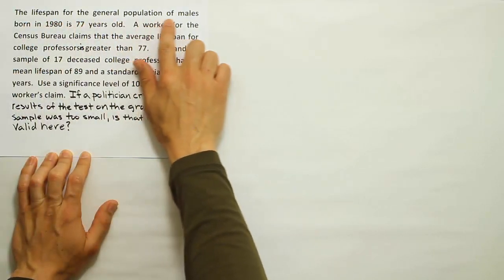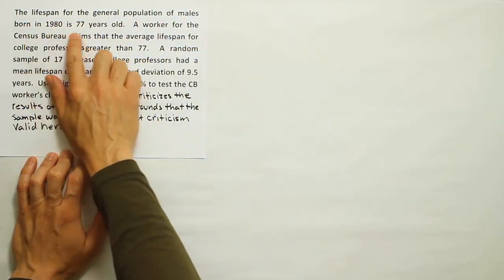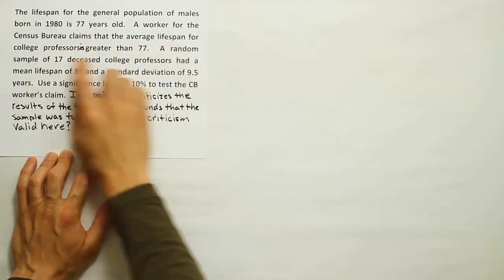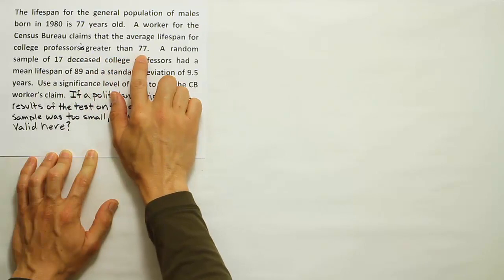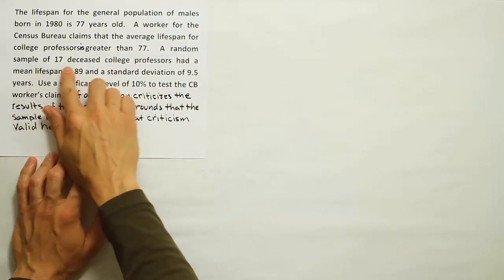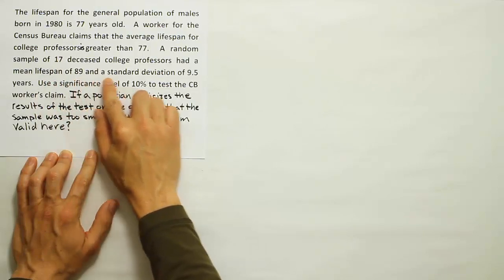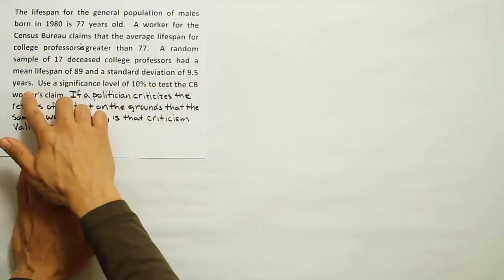The lifespan for the general population of males born in 1980 is 77 years old. A worker for the Census Bureau claims that the average lifespan for college professors is greater than 77. A random sample of 17 deceased college professors had a mean lifespan of 89 and a standard deviation of 9.5 years.